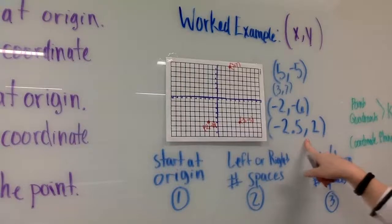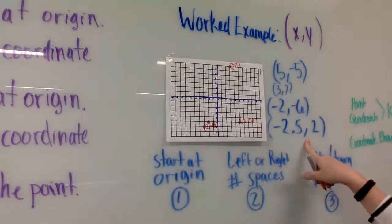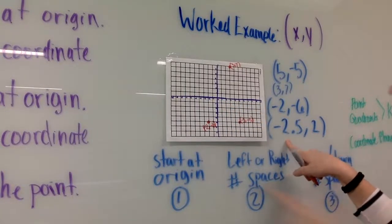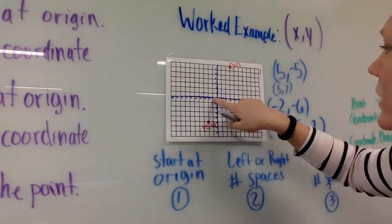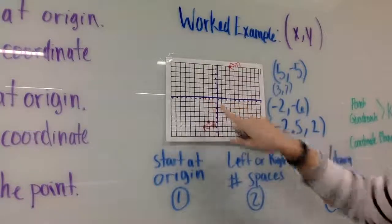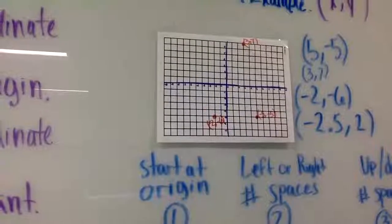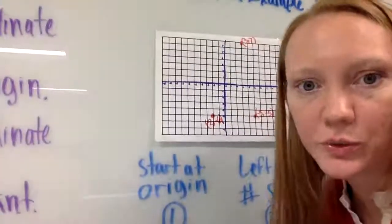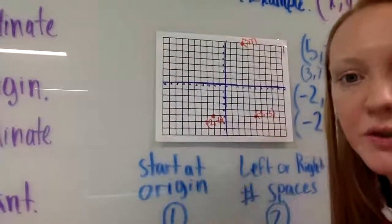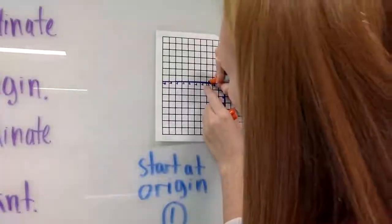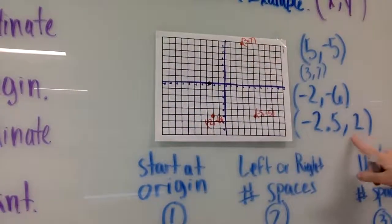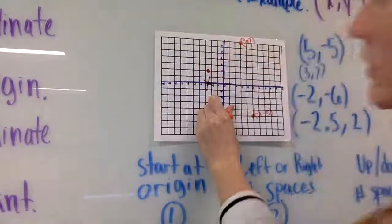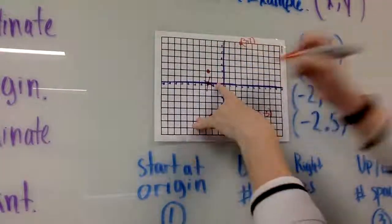Our last coordinate is (-2.5, 2). Starting at the origin, because the x coordinate is negative I go to the left. I go negative one, negative two, negative three — I do not have negative 2.5 on my grid. Two and a half is halfway between two and three, so the point will be halfway between those. The y coordinate is positive two, so I go up two. That's the point (-2.5, 2). That's why you should always use a pencil!